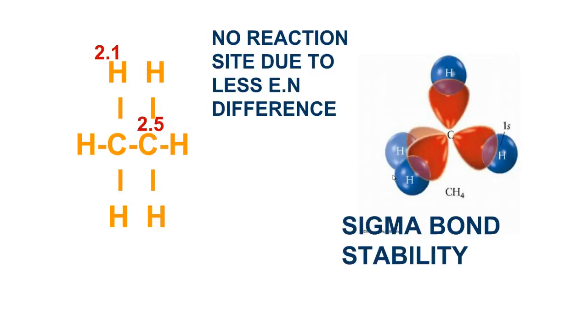The second reason is sigma bond stability. The unreactivity of alkanes can also be explained on the basis of inertness of sigma bond. In a sigma bond, the electrons are very tightly held between the nuclei, which makes it a very stable bond.